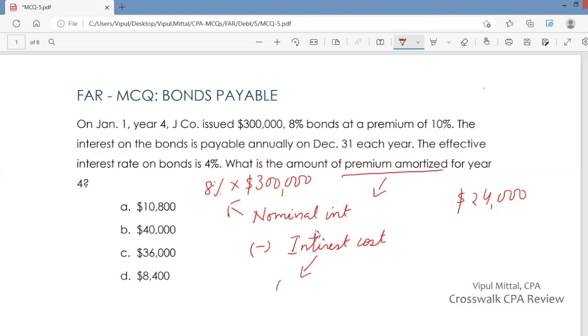This is 4% of amount outstanding. And how do you calculate this amount of bonds payable outstanding? It is base amount increased by unamortized premium.